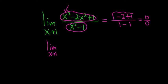The derivative of x cubed is 3x squared. The derivative of negative 2x squared is negative 4x. The derivative of 1 is 0. On the bottom, the derivative of x cubed minus 1 is 3x squared.